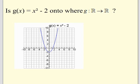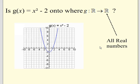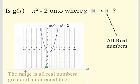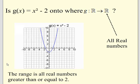Is g(x) = x² - 2 onto, where the available values are all real numbers? Does the range take up all real numbers? The range of this parabola is all real numbers greater than or equal to -2. But that is not all real numbers, because all real numbers less than -2 are not included in the range. So it's not taking up all the values in the given set, which means it is not onto.